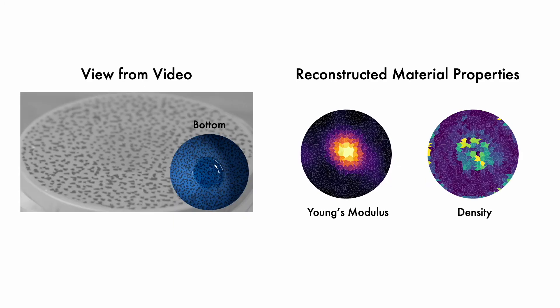This drum has a particularly stiff region in its center, a defect that was introduced by painting gel onto the underside of the drum top. Although the gel is not visible in the video, our method recovers the location and size, as well as relative Young's modulus and density of the defect.